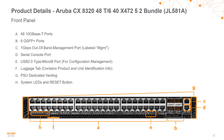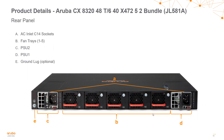Looking at the 10 gig Base-T switch, it's a very similar setup, except now we're using 1/10 gig Base-T ports along the front of the switch. It also adds a USB Type-B micro port for configuration management. On the back, the two power supplies and five fan trays come pre-installed, along with the grounding lugs.